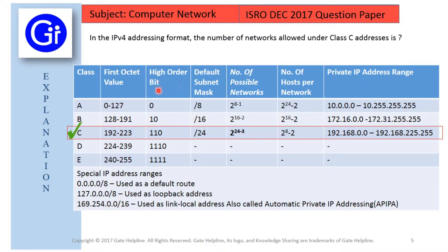The next column is higher order bits — that is 0 for class A, 10 for class B, and 110 for class C. The default subnet masks are slash 8, slash 16, and slash 24.